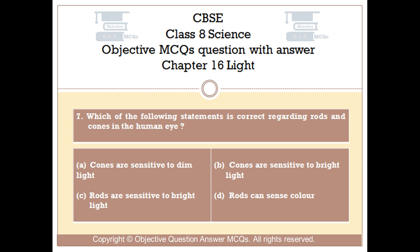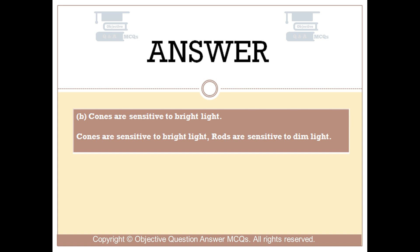Question number 7: Which of the following statements is correct regarding rods and cones in the human eye? Option A: Cones are sensitive to dim light. Option B: Cones are sensitive to bright light. Option C: Rods are sensitive to bright light. Option D: Rods can sense color. The right answer is option B — cones are sensitive to bright light. Rods are sensitive to dim light.